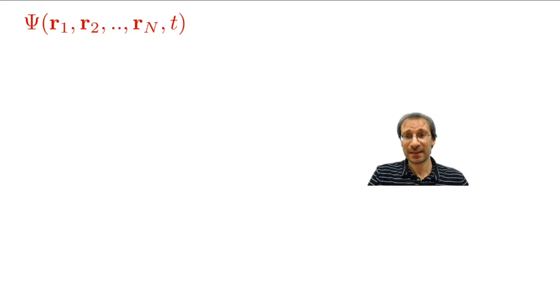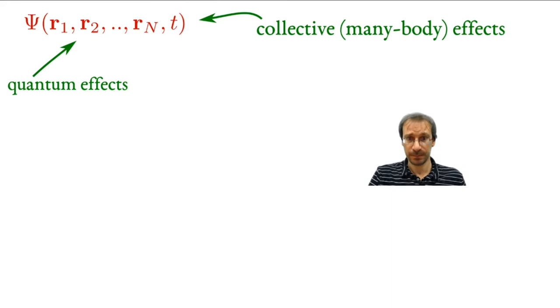The fact that we have only probabilities is not the only complication. The problem is also that every electron interacts with all the others, and this can lead to collective effects, things that are not just the sum of the effect of every single electron, and that you would have probably never guessed.